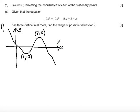Part C says, given that the equation minus 2x cubed plus 12x squared minus 18x plus 5 is equal to k has three distinct real roots, find the range of possible values for k. So what we're saying here is, let's write this in f of x notation, f of x is equal to k.